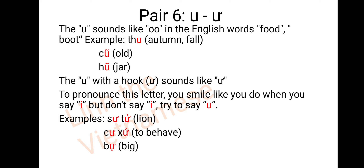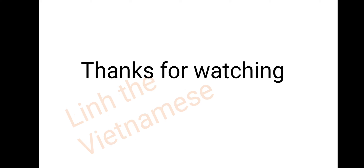Pair 6: U and Ư with a hook. The U sounds like 'U' in English words like 'food'. For example: thô, cổ, hổ. The Ư with a hook sounds like 'ư'. To pronounce this letter, you smile as if you are saying E, but instead try to say U. For example: sư tử, cư sử, bự. Thanks for watching.